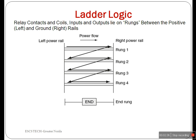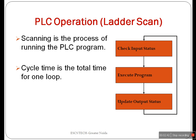Each rung starts with one or more inputs and ends with at least one output. A PLC scans the logic of a ladder program rung by rung from top to bottom. Usually all the outputs are updated based on the status of the internal registers.